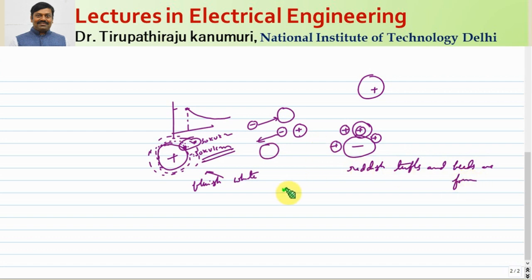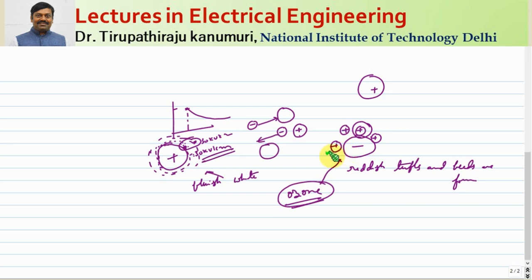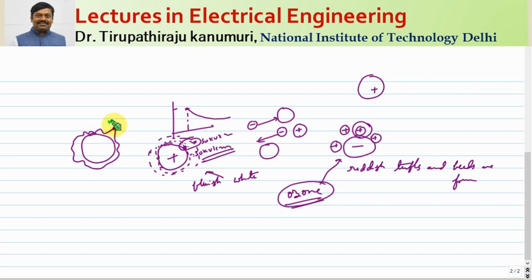Along with the light, ozone gas is also produced. This ozone gas can be detected by its smell, and its disadvantage is that it corrodes the conductor surface. It is also observed that the extent of breakdown depends on the shape of the conductor — circular shapes are less affected. In ACSR conductors, or when dust accumulates, the potential gradient is maximum at sharp points, where corona occurs first, even below 30 kV per centimeter.